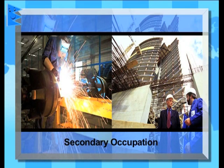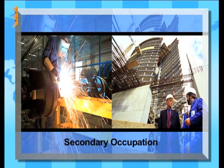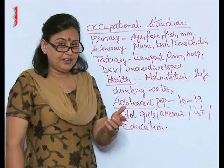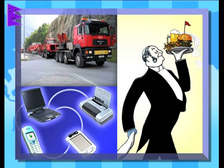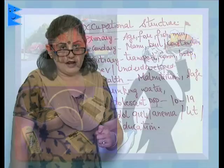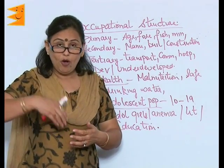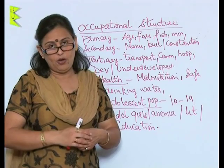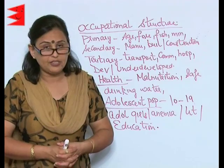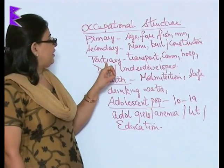The secondary occupation is all about manufacturing and processing — it could be building, construction, or manufacturing. Then there is the tertiary sector, which includes transport, communication, hospitality, and many other such services, which are neither producing nor processing, but simply providing service to the nation.